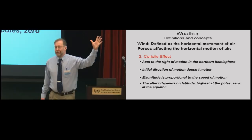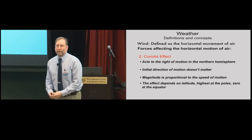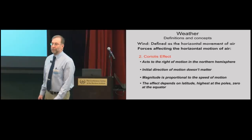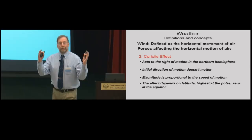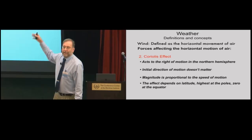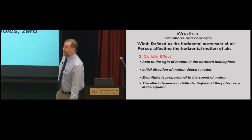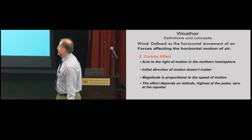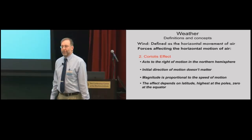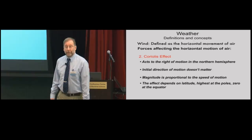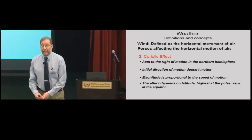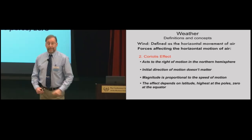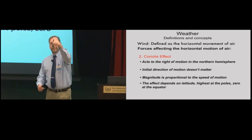The Coriolis effect is a correction factor for the fact that our frame of reference — latitude and longitude — rotates with the Earth. In the northern hemisphere, it acts to the right of motion, deflecting it to the right regardless of the initial direction. The magnitude of the Coriolis effect is proportional to the speed of motion — faster motion means more deflection. The effect also depends on latitude: at the equator the local vertical axis isn't rotating, while at the pole there's a great deal of rotation about it.